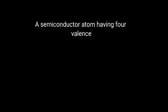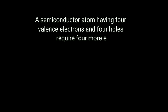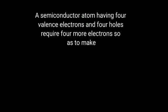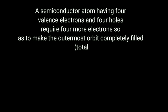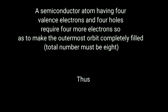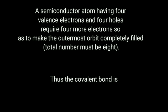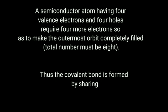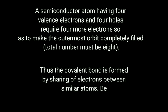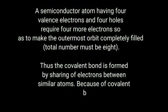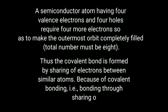A semiconductor atom having 4 valence electrons and 4 holes requires 4 more electrons to make the outermost orbit completely filled — the total must be 8. Thus, the covalent bond is formed by sharing of electrons between similar atoms, so they make a covalent bond.